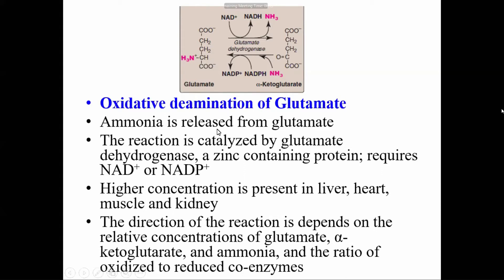The reaction is catalyzed by glutamate dehydrogenase, a zinc-containing protein, which requires NAD or NADP. This is one of the rare examples where an enzyme can utilize either NAD or NADP as the coenzyme. The enzyme is present in high concentrations in liver, heart, muscle, and kidney. The reaction catalyzed by glutamate dehydrogenase is reversible, and the direction of the reaction depends on the relative concentrations of glutamate, alpha-ketoglutarate, and ammonia, and the ratio of oxidized to reduced coenzymes.